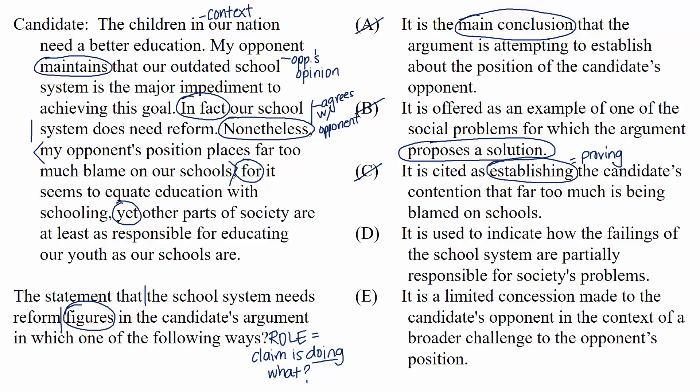D: it is used to indicate how the failings of the school system are partially responsible for society's problems. No — nobody in this passage said that the failings of the school system are responsible for society's problems, so proving that can't be the purpose of the claim. That leaves us with E: it is a limited concession made to the candidate's opponent in the context of a broader challenge to the opponent's position. Yes — this matches our prediction. It is a limited concession because the candidate and opponent agree that the school system needs reform. It's limited because the opponent places more blame on schools while the candidate places less. That's the broader challenge, and this choice accurately describes what the claim is doing in the passage.